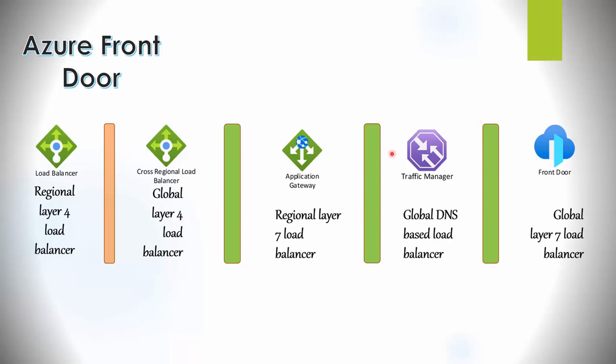For completeness, there's also Traffic Manager, which is a global DNS-based load balancer that relies on DNS capabilities. Because it relies on DNS, it has DNS-specific limitations, such as it does not fail over as quickly as Front Door does. Front Door fails over instantly, whereas DNS relies on specific DNS timeout values to expire before it can fail over.